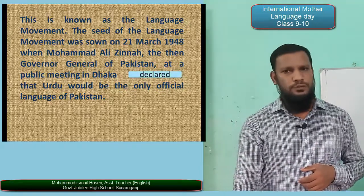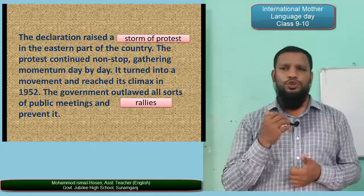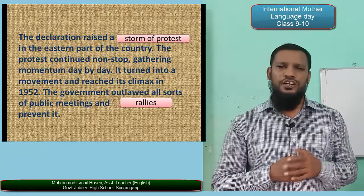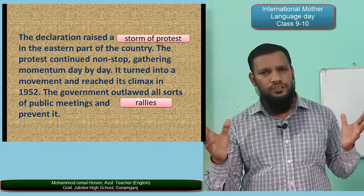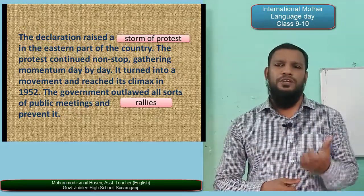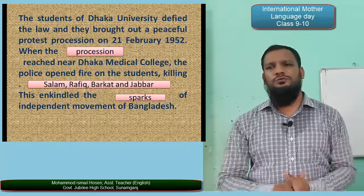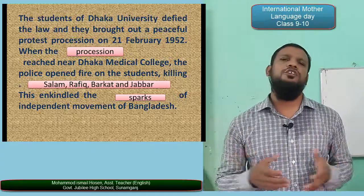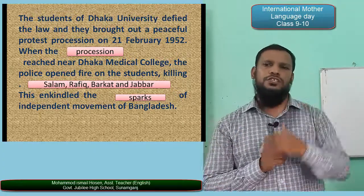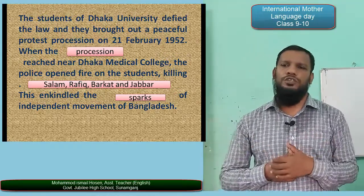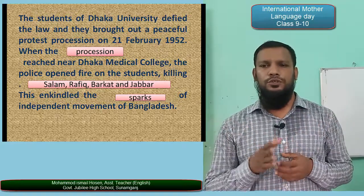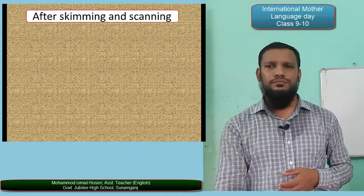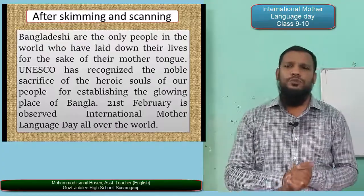The declaration raised a storm of protest in the eastern part of the country. The protest continued non-stop, gathering momentum day by day. It turned into a movement and reached its climax in 1952. The government outlawed all sorts of public meetings and rallies to prevent it. The students of Dhaka University defied the law and brought out a peaceful protest procession on 21st February 1952. When the procession reached near Dhaka Medical College, the police opened fire on the students, killing Salam, Rafiq, Barakat, and Jabbar. This kindled the sparks of the independence movement of Bangladesh.